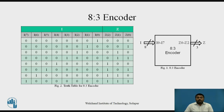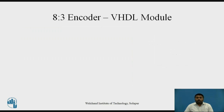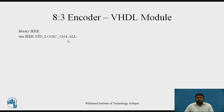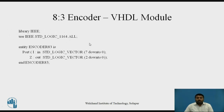Before starting the test bench writing, you must know about the VHDL code or module for this 8-to-3 encoder. Let us have a look at that VHDL module. Every module has three important parts. First is a library declaration — library IEEE is included, and from that we are using the package std_logic_1164, so we write: use IEEE.std_logic_1164.all. Second important part is the entity declaration.